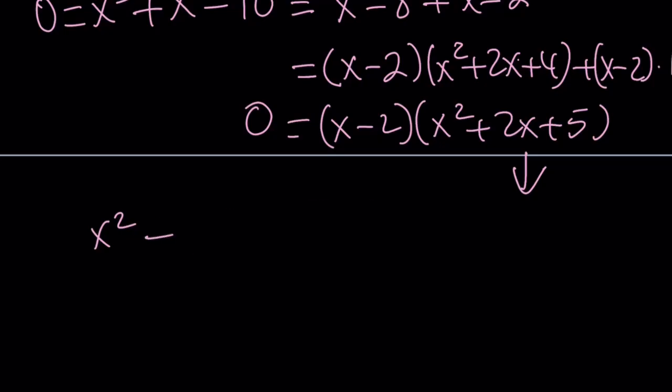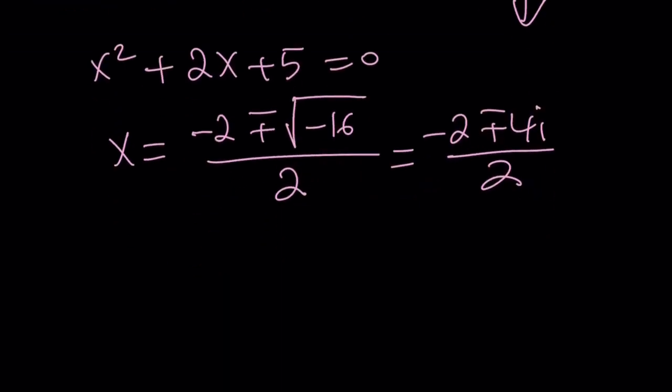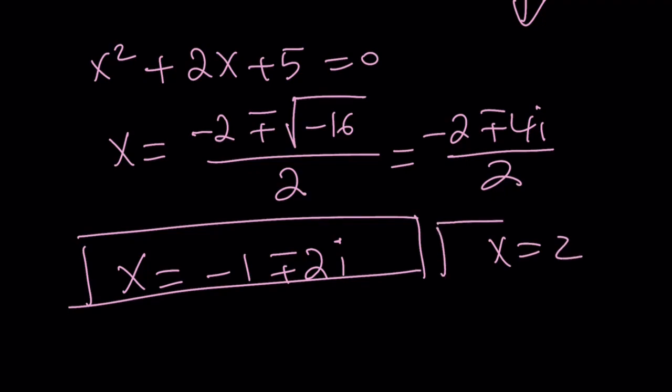x squared plus 2x plus 5 equals 0. And this has non-real complex solutions. Negative b plus minus the square root of b squared minus 4ac, which is negative 16. That is a negative perfect square. And that can be written as negative 2 plus minus 4i, because 4i times 4i is 16i squared, which is negative 16. And we can divide everything in the numerator by 2. And we get x equals negative 1 plus minus 2i. Along with x equals 2, that gives us three solutions.